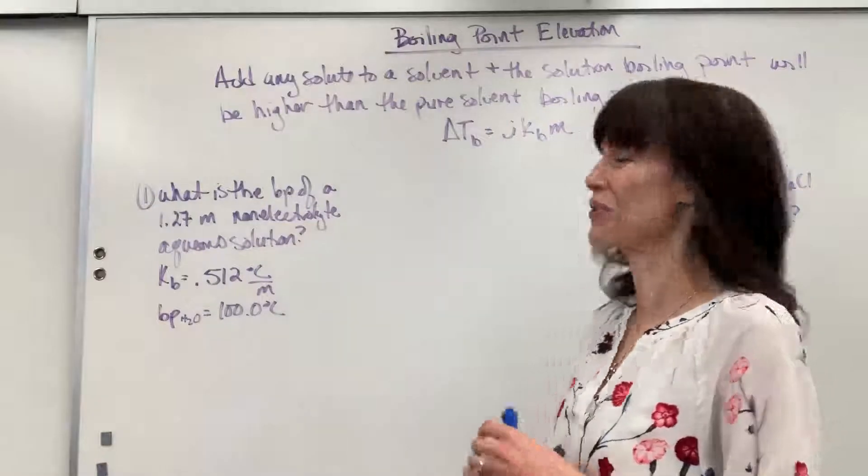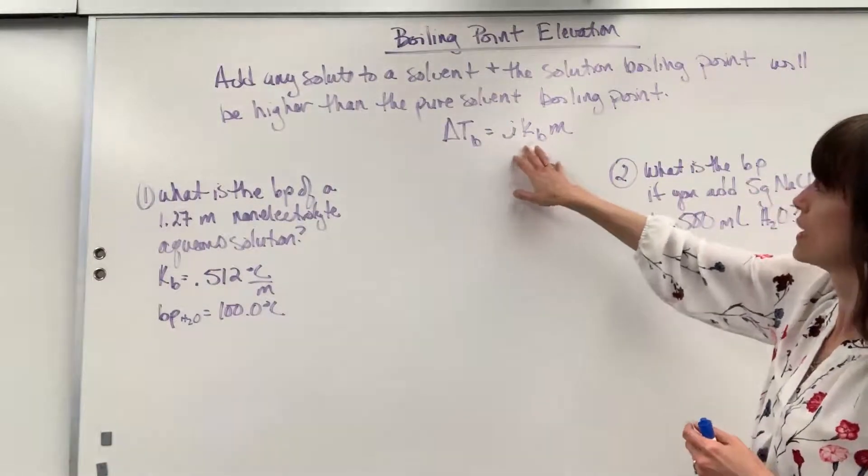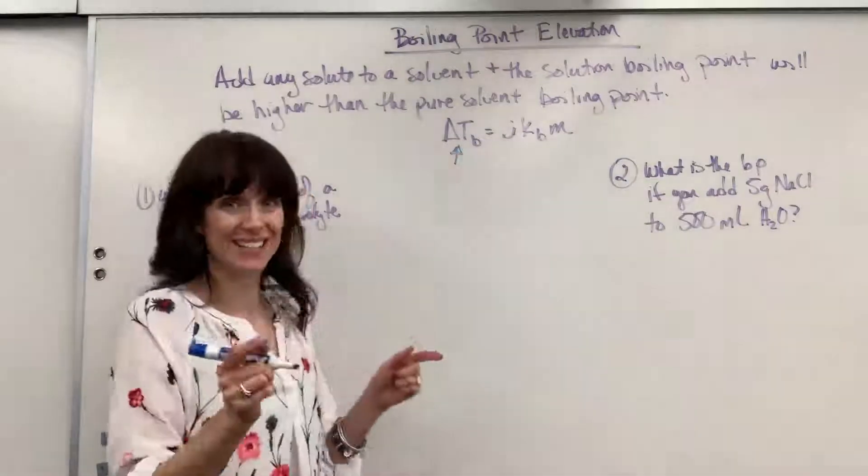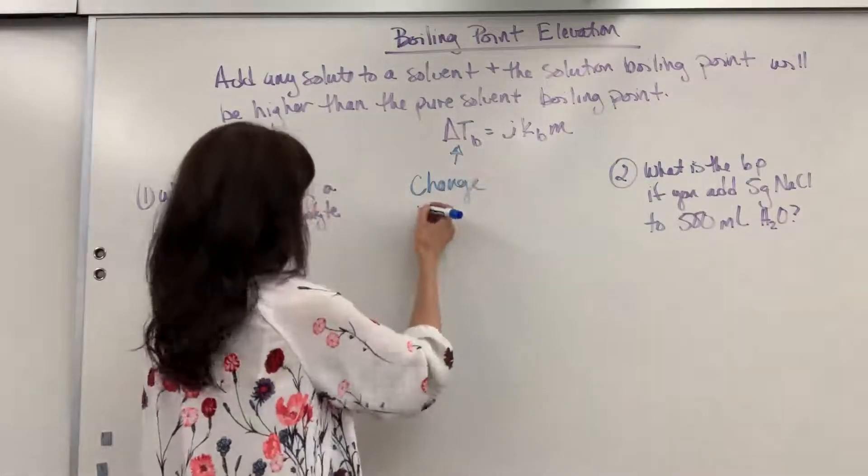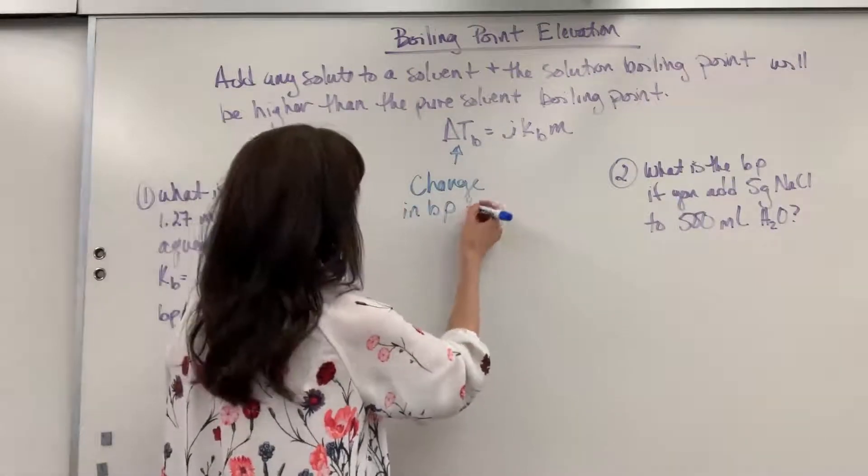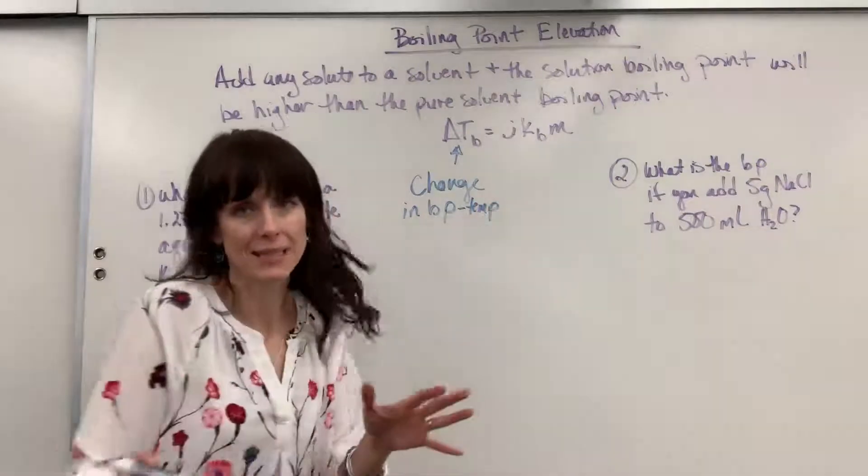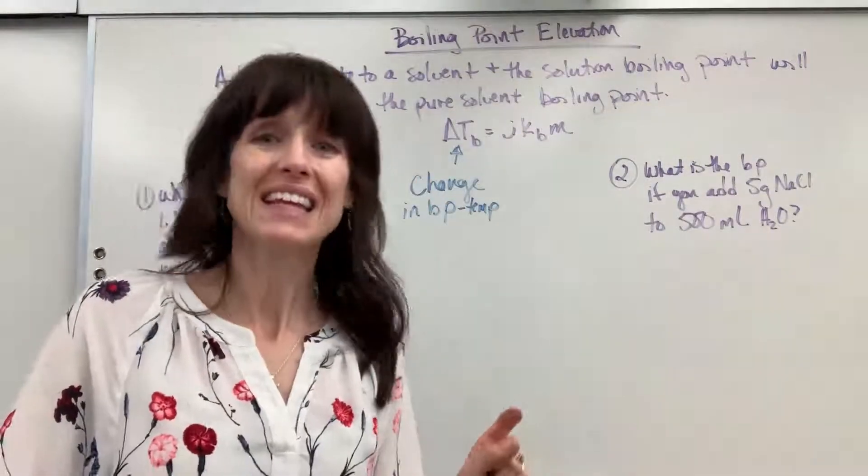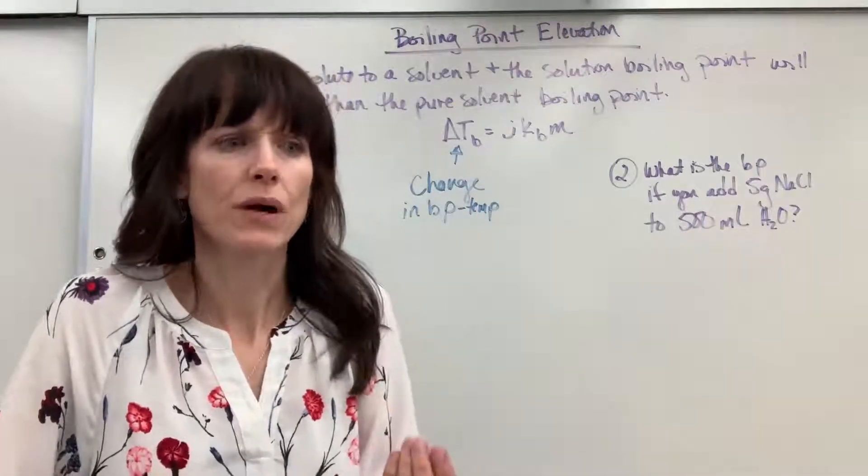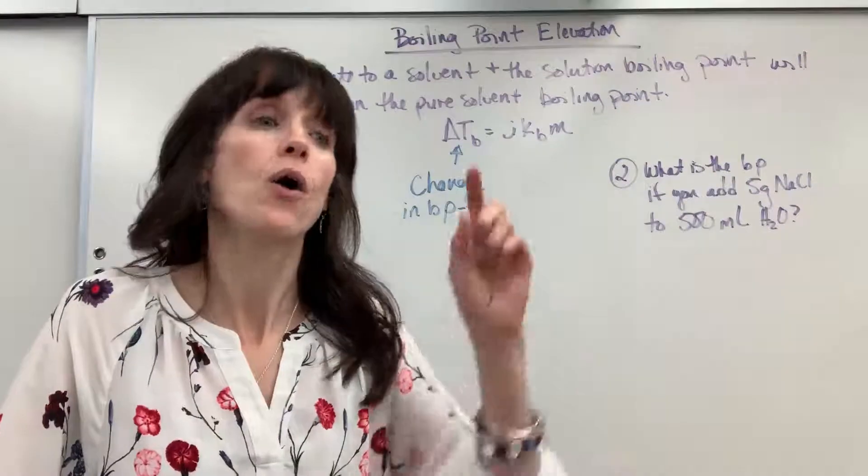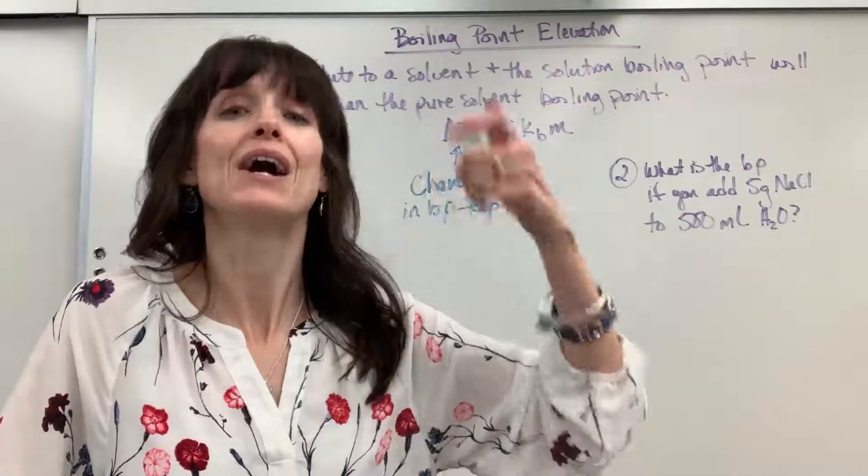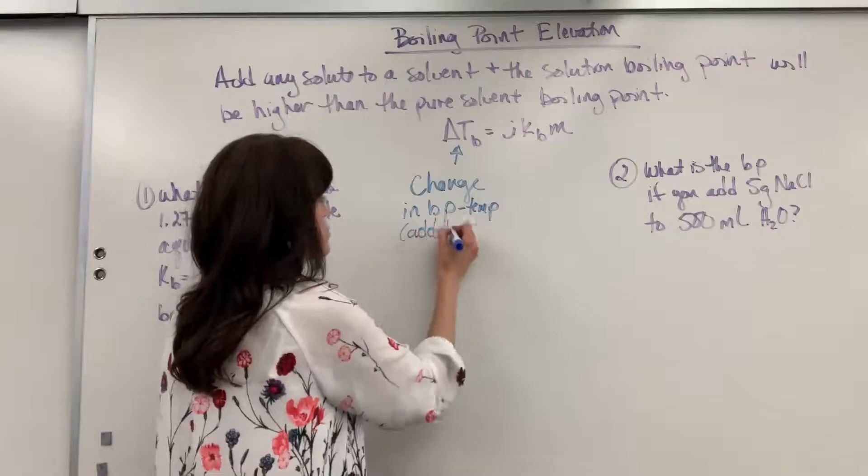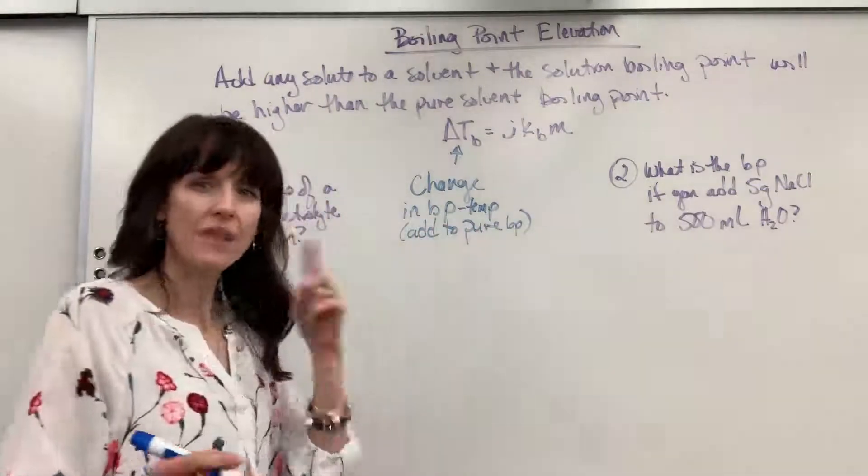I want to give you the formula. It is delta T sub B equals I K B times M. So the delta T sub B, this is really important, it's the change in boiling point. This is not the new boiling point. If I do all of this math and I come up with 3.2, that's the increase in the boiling point, not the new temperature. It means that it will boil at 100 plus 3.2, at 103.2 degrees C. This is the increase, which means you have to add this to the pure boiling point.